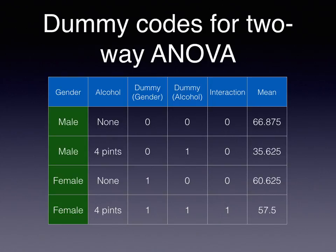In this two-by-two design, there's an interaction. An interaction occurs when the two variables interact — it may be the case that the effects of alcohol are different for men than they are for women. You could also look at it the other way around: there may be a gender difference that is not the same in the presence of alcohol as it is when there's no alcohol. This interaction effect is coded by multiplying the dummy codes for each individual group to produce the interaction dummy code.